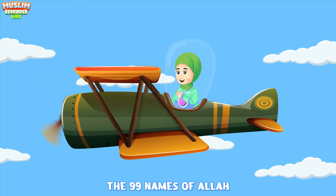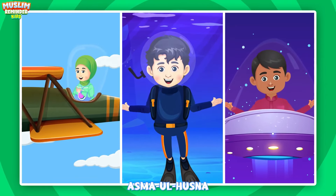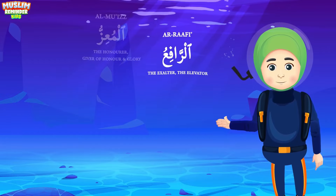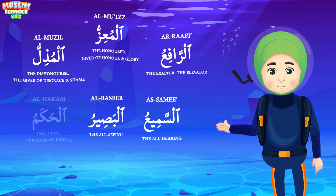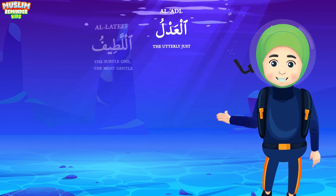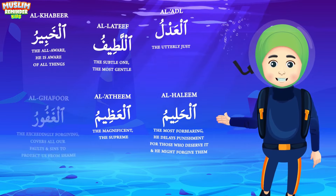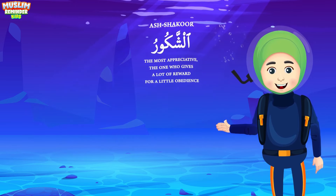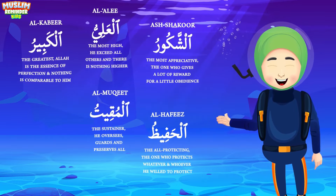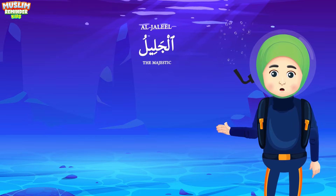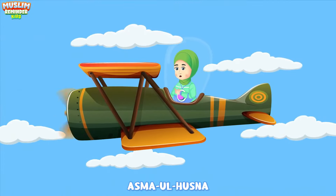Asma'ul Husna — the 99 names of Allah, the 99 attributes of Allah. Al-Rafi', Al-Mu'izz, Al-Mudhill, Al-Sami', Al-Basir, Al-Hakam, Al-Adl, Al-Latif, Al-Khabir, Al-Halim, Al-Azim, Al-Ghafur, Al-Shakur, Al-Ali, Al-Kabir, Al-Hafiz, Al-Muqit, Al-Hasib, Al-Jalil, Al-Karim, Al-Raqib, Al-Mujib.